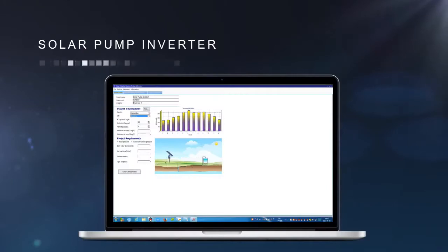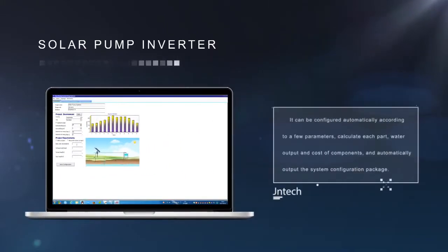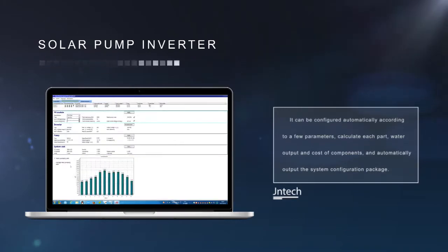With system design software, it can be configured automatically according to a few parameters, calculate each part, water output, and cost of components, and automatically output the system configuration package.